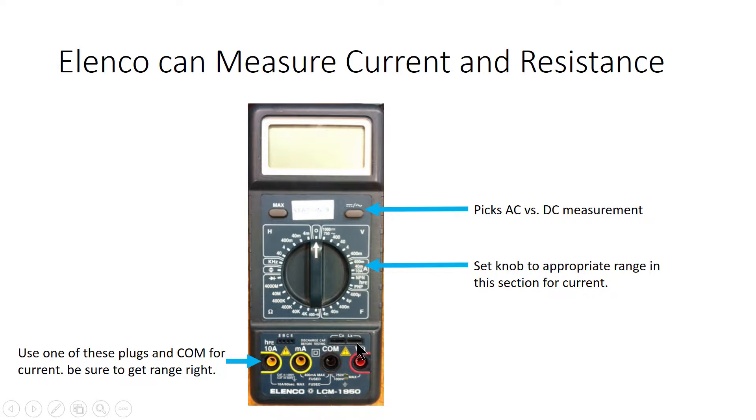To take them, you use the COM plug and the two current plugs that are highlighted in yellow over here. You pick which current plug to use based on the amount of current you expect to measure. One of these is suitable for very high currents, like 10 amps, and the other is suitable for lower currents, on the order of milliamps.